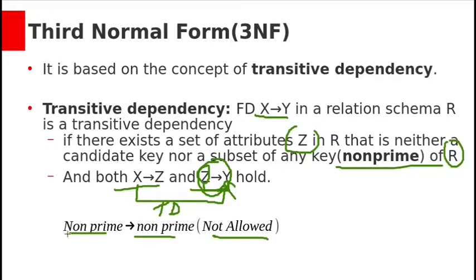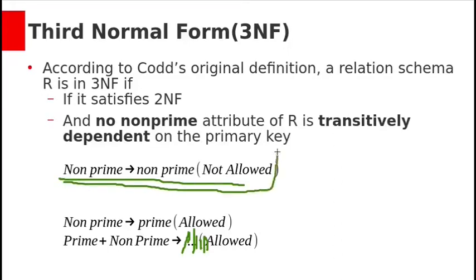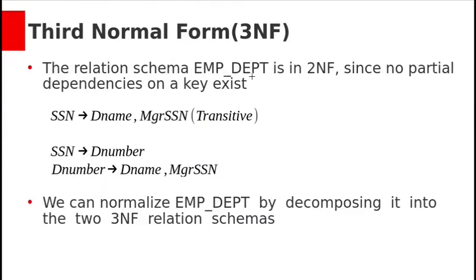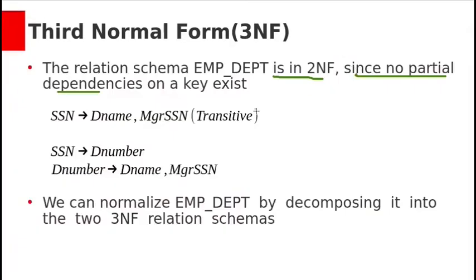According to Codd's original definition, a relation schema is in 3NF if it satisfies 2NF and no non-prime attribute of R is transitively dependent on the primary key. This transitive dependency exists when a non-prime attribute Z derives another non-prime attribute, which is not allowed. Non-prime deriving non-prime functional dependencies must be removed to achieve 3NF. Non-prime can derive prime, and prime or non-prime can derive anything — both are allowed.